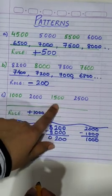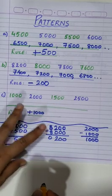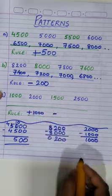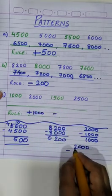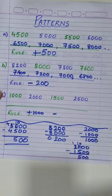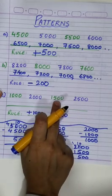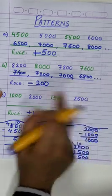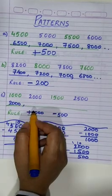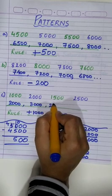But then, as you can see, the number becomes smaller, which means we have two rules here. First we have to add 1,000, then we have to subtract — 2,000 minus 1,500 gives 500, so we subtract 1,000 and then subtract 500 alternately. After adding 1,000, again we subtract 500. Again we add 1,000, which becomes 3,000. Again subtract 500, it becomes 2,500.